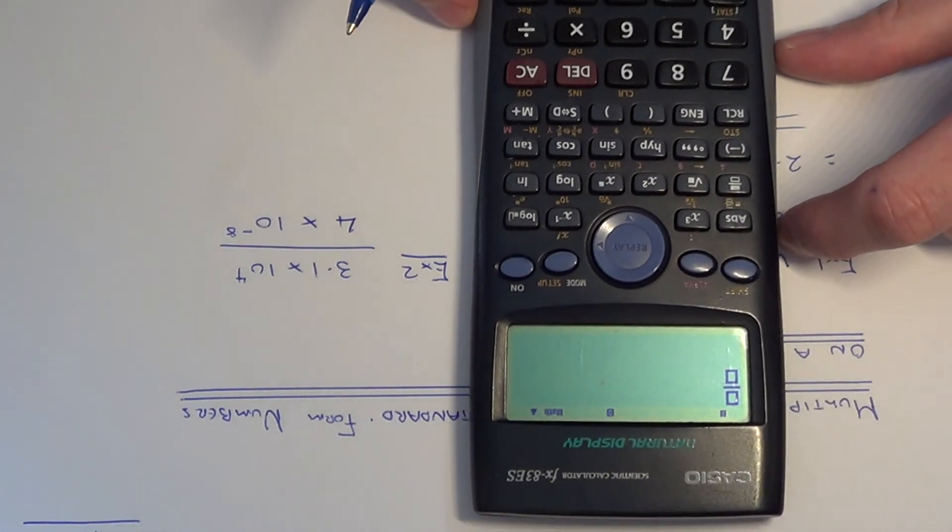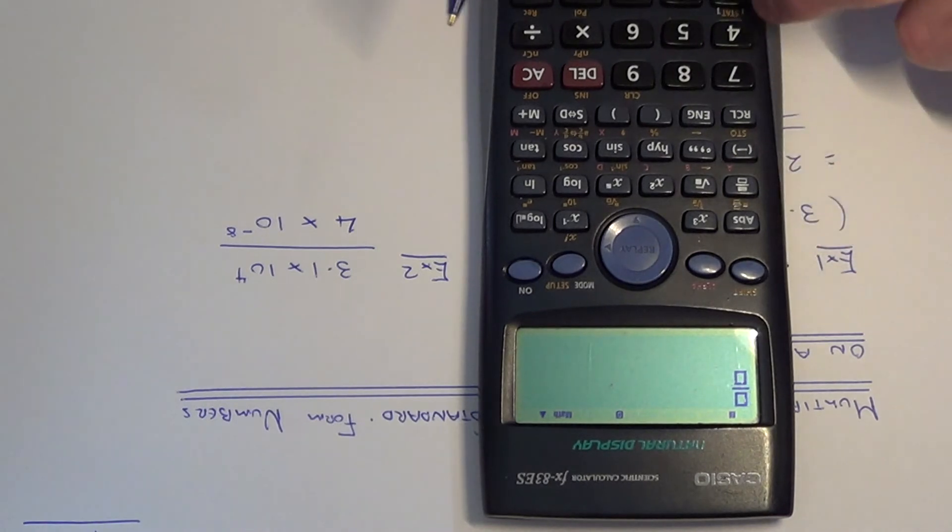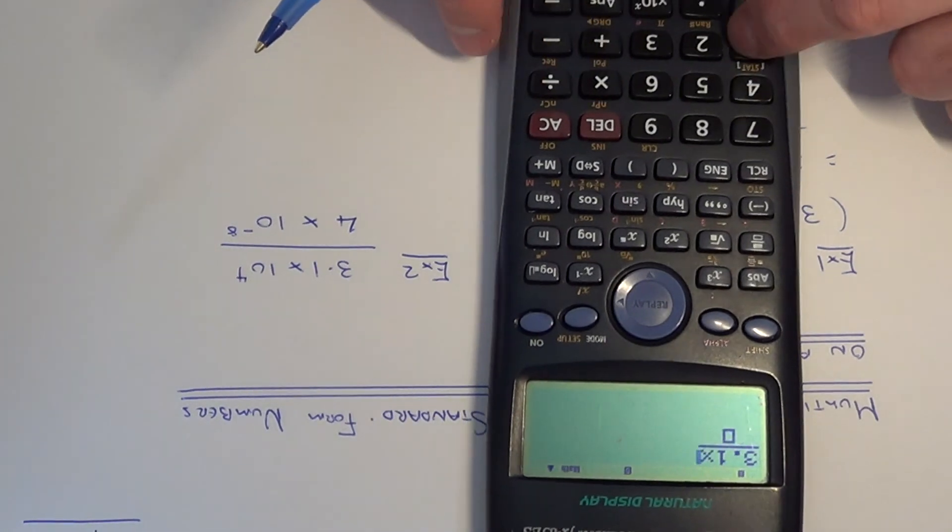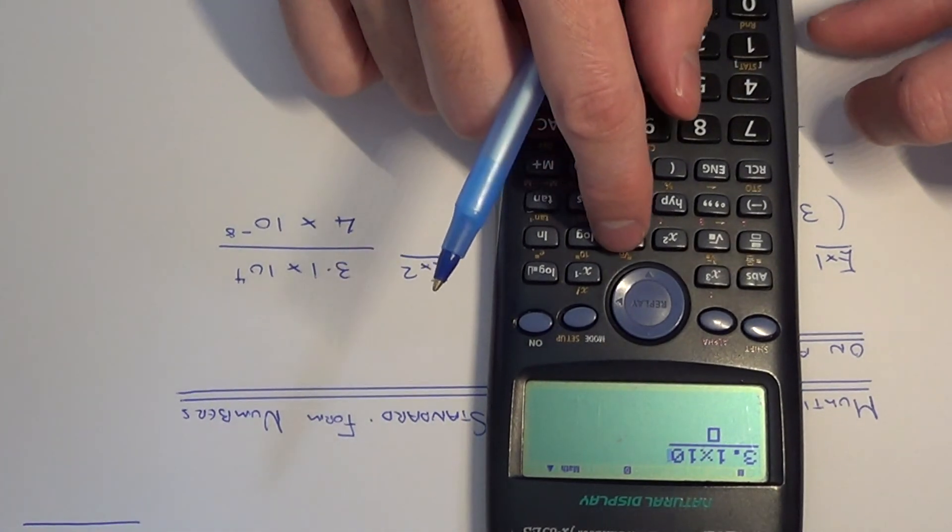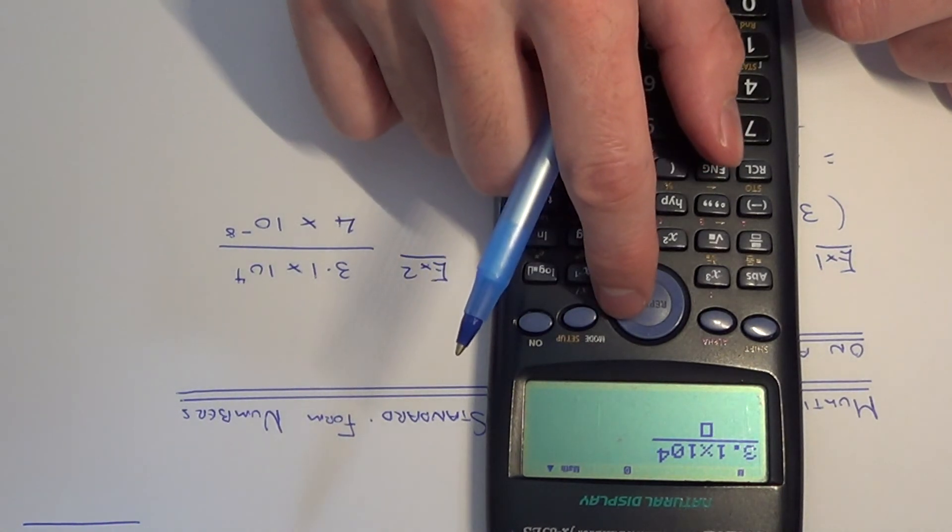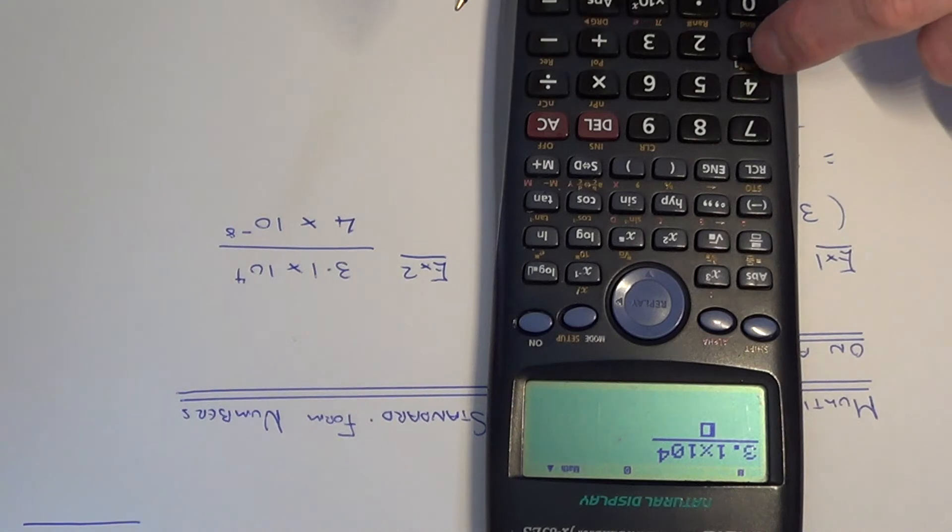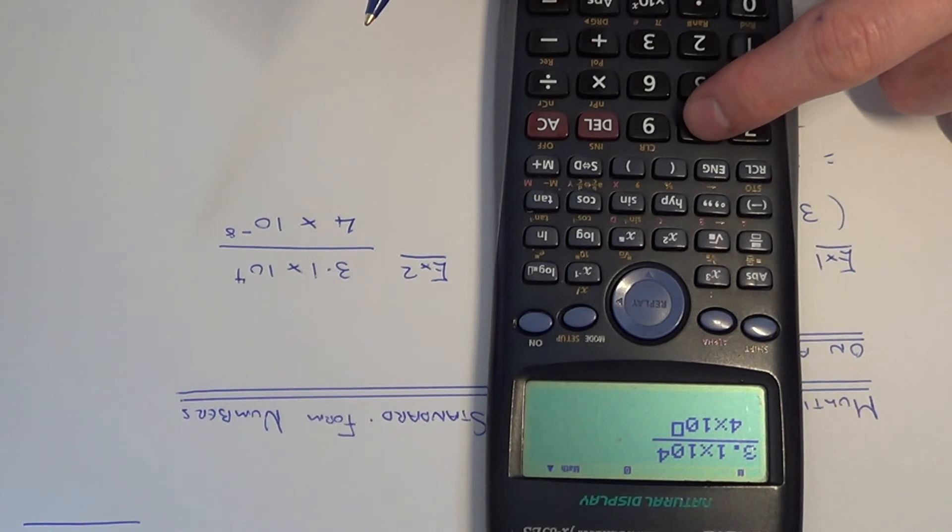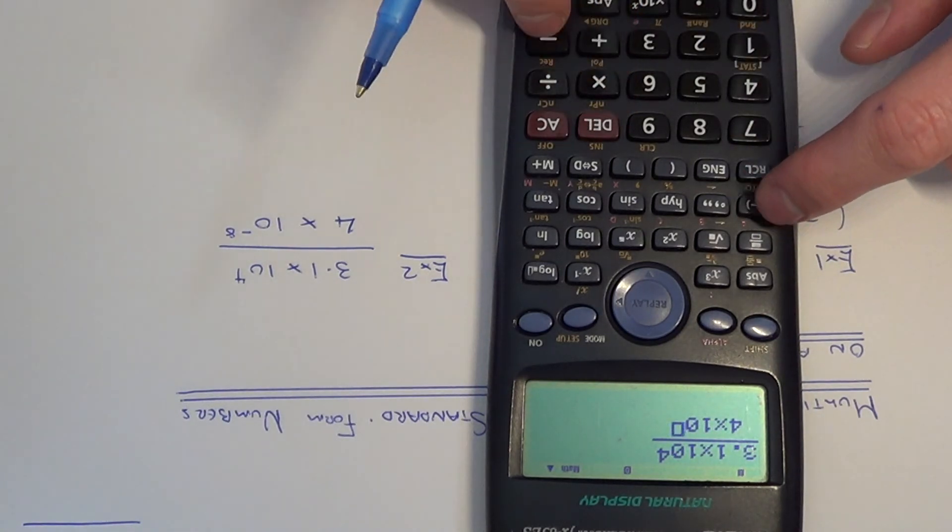Hit the fraction key like so. On the top we need to type in 3.1 times 10 to the power of 4. Here is your power key again. We need to type the second number in on the denominator, so we have 4 times 10 to the power of minus 8.